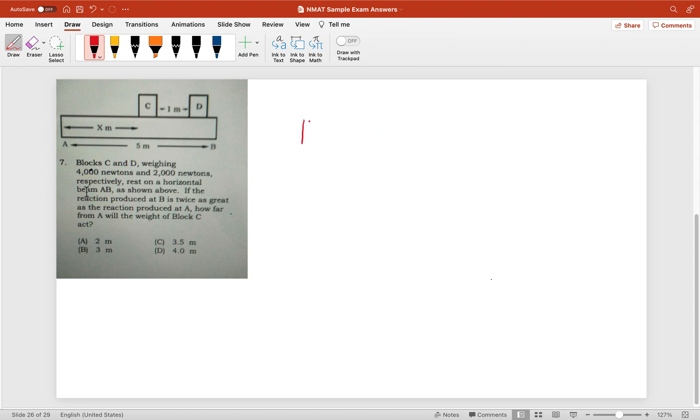Now, I will write this as a free body diagram. So here we have a beam, and this block has a weight of 4,000 N - this is block C. And we have another block here, block D, which has a weight of 2,000 N.